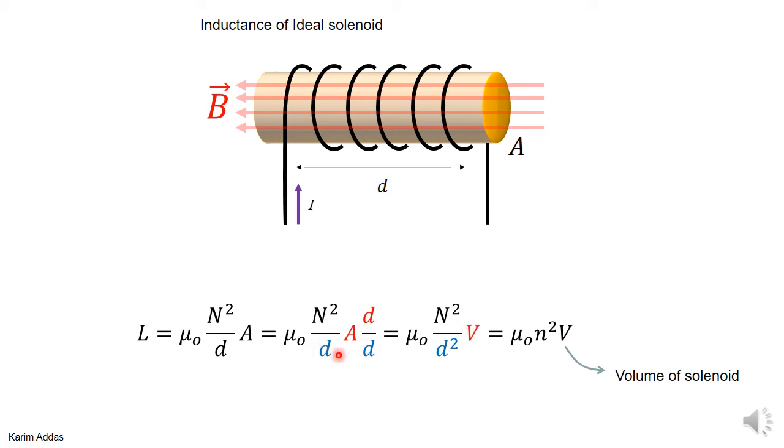You can combine the two d's, you have d squared in the denominator, and you have N squared over d squared, which is small n squared. So you can write down the inductance also in this way, in terms of the volume and small n. Clearly the inductance depends only on the geometry of the problem.